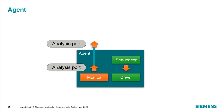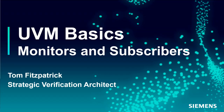In the agent, on the monitoring side, we have the monitor connected to the virtual interface to recognize the pin level activity supplied by the driver, gather that information, put it into a transaction object, and communicate that transaction object out through its analysis port, up through the agent's analysis port, to the rest of the environment. That's it for this session of UVM Basics, Monitors and Subscribers. Please stay tuned for the next session.